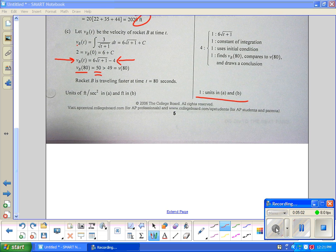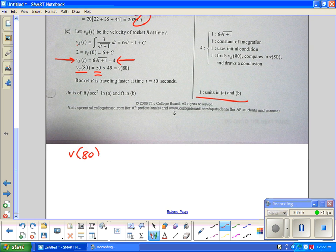An alternative method would be to do the fundamental theorem of calculus. If you want V of 80, that's going to be equal to V of zero plus the integral from zero to 80 of A of T DT. If you did this,